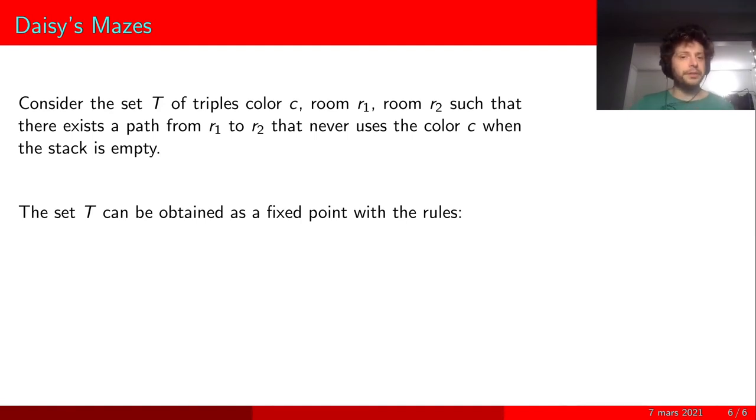The new trick is to consider the set T of triples of a color, a room r1, and a room r2, such that there exists a path from r1 to r2 that never uses the color c when the stack is empty. And this set T can be obtained as a fixed point using the following rules.